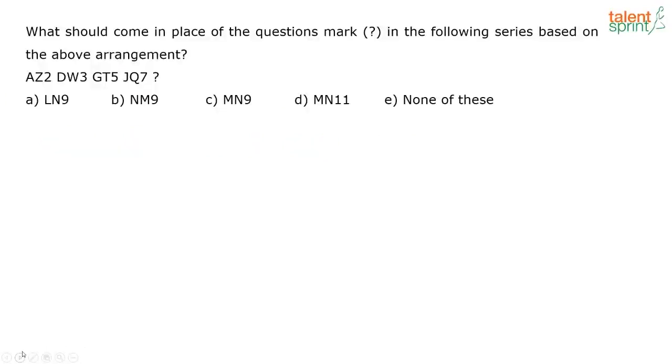What should come in the place of question mark in the following series based on the above arrangement? See one very easy thing that you notice in this question is this. If you look at the numbers, right, that is given 2, 3, 5, 7. Prime numbers. So what should come here? It should be 11. So definitely it's going to be option D.